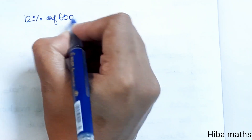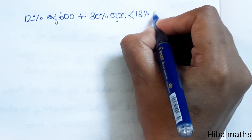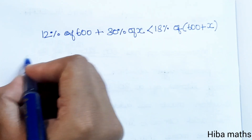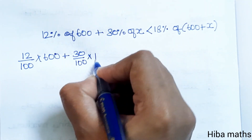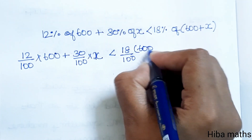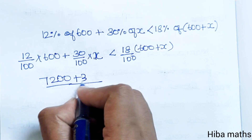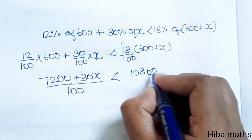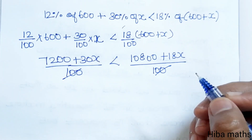Second inequality: 12% of 600 plus 30% of x is less than 18% of the total mixture, 600 plus x. That gives us: 12/100 × 600 + 30/100 × x < 18/100 × (600 + x). This works out to 7200 + 30x divided by 100, less than 10800 plus 18x divided by 100.